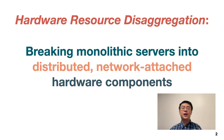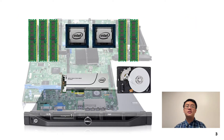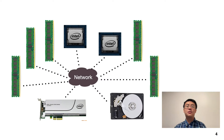Hardware resource disaggregation has been a trending topic in data centers. This means bringing monolith servers into distributed, network-attached hardware components. In a disaggregated setup, we bring a server's compute, memory, storage, and even accelerator resources out of the server box and attach them to the network. This brings better resource utilization, heterogeneity, and flexibility in the data center.